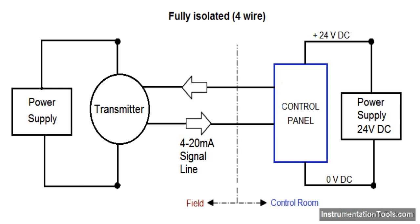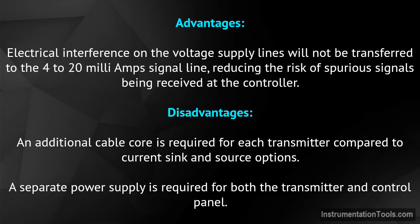Four-wire fully isolated transmitter. The transmitter and control panel use separate power supplies. The 4 to 20 milliamp signal flows through two separate cable cores between the transmitter and control panel. Advantages: electrical interference on the voltage supply lines will not be transferred to the 4 to 20 milliamp signal line, reducing the risk of spurious signals being received at the controller.